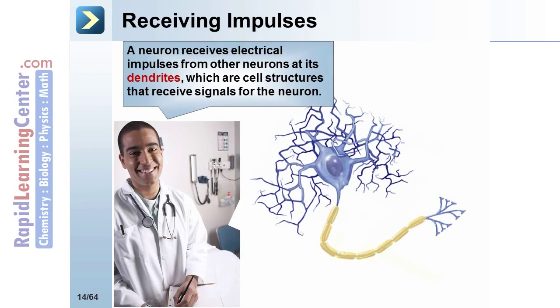Receiving impulses: a neuron receives electrical impulses from other neurons at its dendrites — cell structures that receive signals for the neuron.